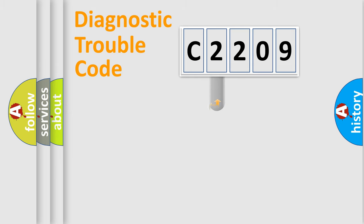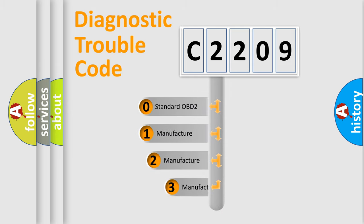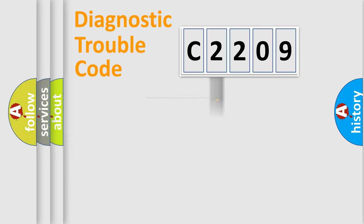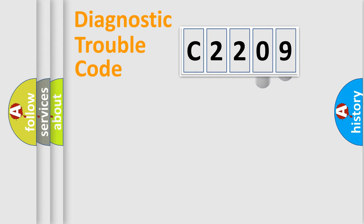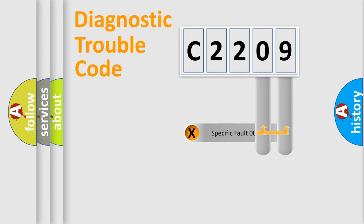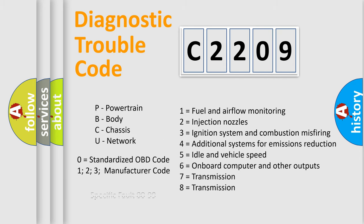This distribution is defined in the first character of the code. If the second character is expressed as zero, it is a standardized error. In the case of numbers 1, 2, or 3, it is a more specific expression of a car-specific error. The third character specifies a subset of errors. This distribution is valid only for the standardized DTC code, and only the last two characters define the specific fault of the group. Such a division is valid only if the second character is expressed by the number zero.